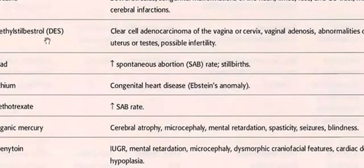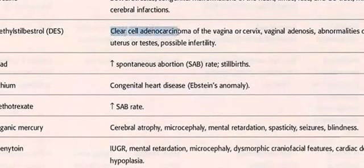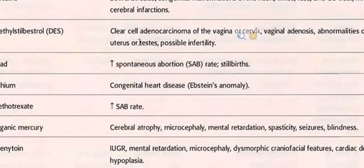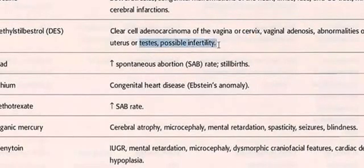DES — Diethylstilbestrol: it has clear-cell adenocarcinoma of the vagina, which is very important for the USMLE. Also vaginal adenosis, abnormality of the cervix and uterus or testes, and possible infertility.